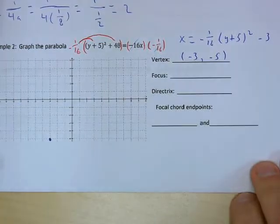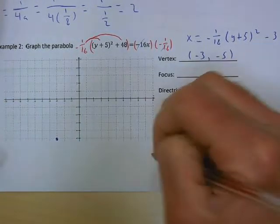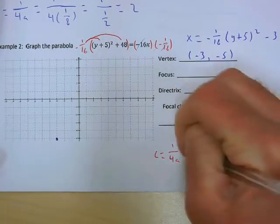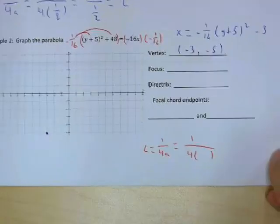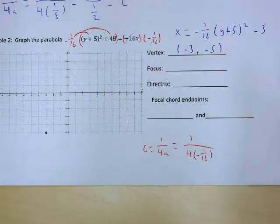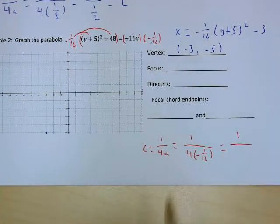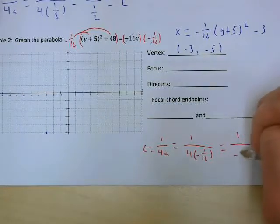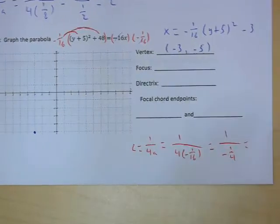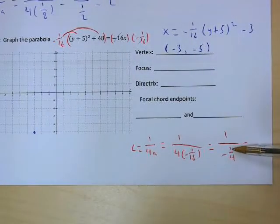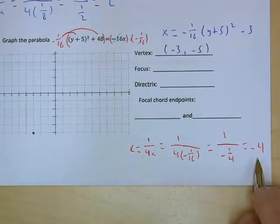Next, find the focal length for the focus, directrix, and focal chord endpoints. c = 1/(4a) = 1/(4 × -1/16) = 1/(-4/16) = 1/(-1/4) = -4. Our focal length is -4. The negative just tells us direction — we're moving left. We already knew that because it's x = with a negative a value, so it opens to the left.